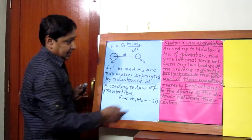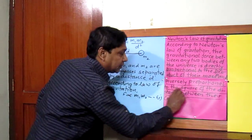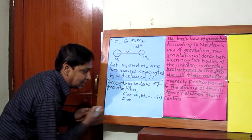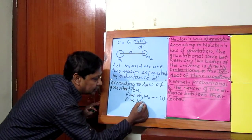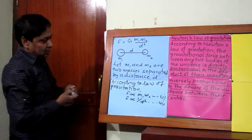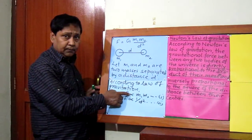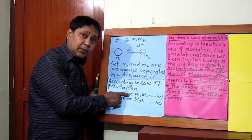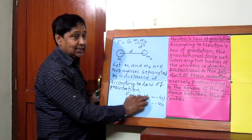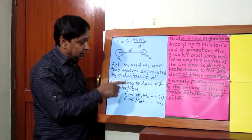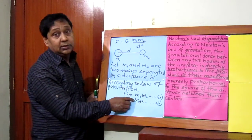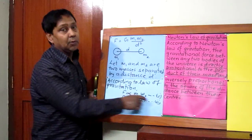Look at the second part. The same gravitational force is inversely proportional to the square of the distance between their centers. So gravitational force F is inversely proportional to d squared. This is equation number two. We need to be clear about this proportionality symbol — it represents both directly proportional and inversely proportional. If the quantity on the right-hand side is in the numerator, we read it as directly proportional; if it is in the denominator, we read it as inversely proportional.